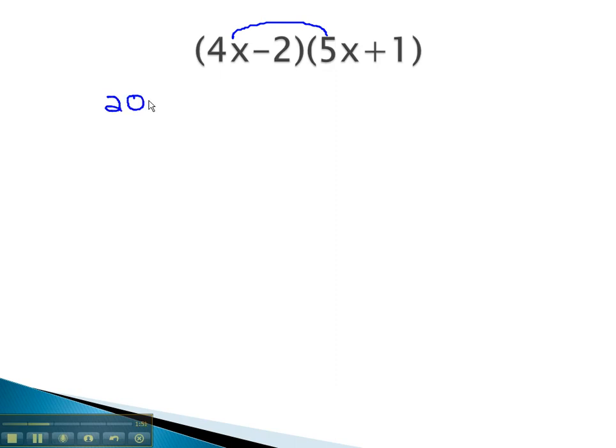4 times 5 gives us 20x squared. Continuing to distribute the 4x through, we have 4x times 1, which is a positive 4x.